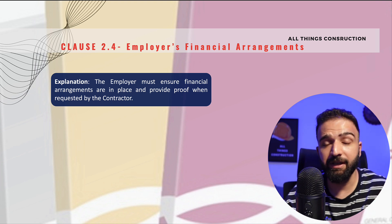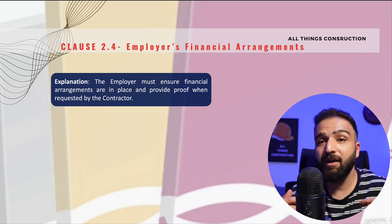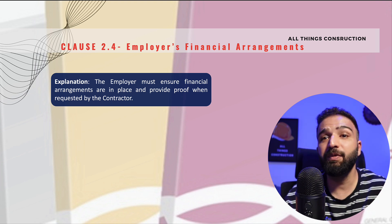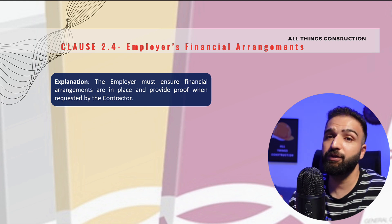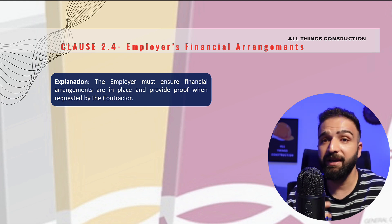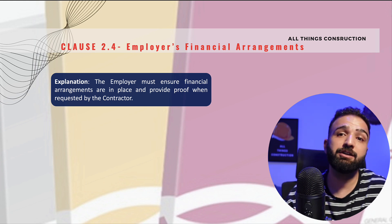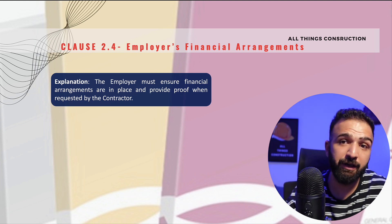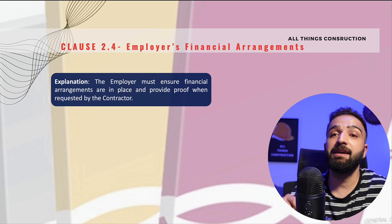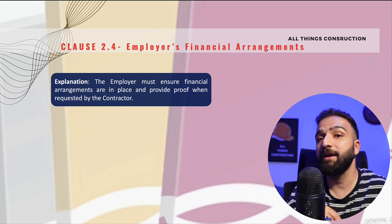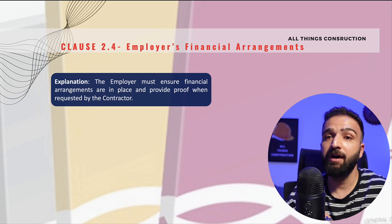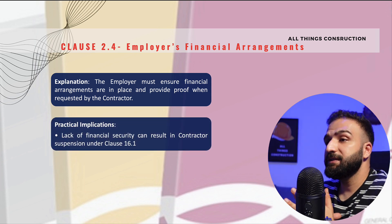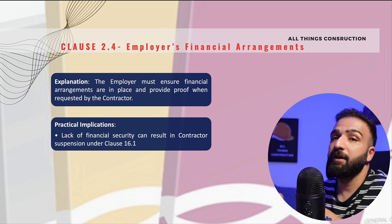If I'm signing a $100 million deal with the employer, I need some assurance as a contractor that the employer will be able to finance this project. So I might require the employer to prove that he is able to finance it in order to mitigate my risk, and this clause obliges the employer to provide that proof if requested.